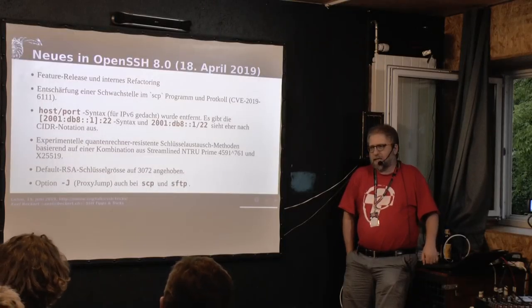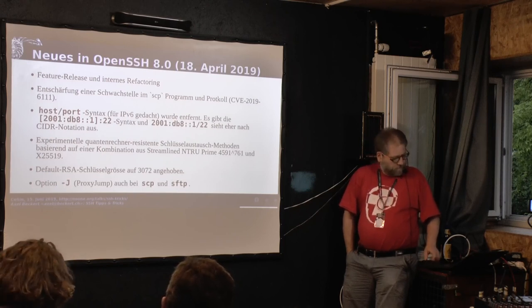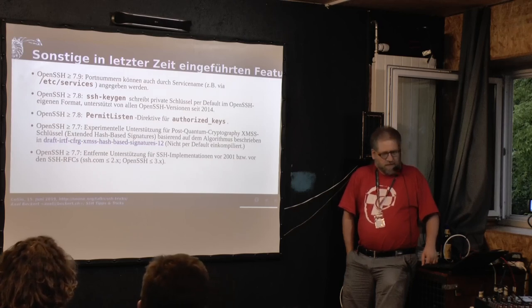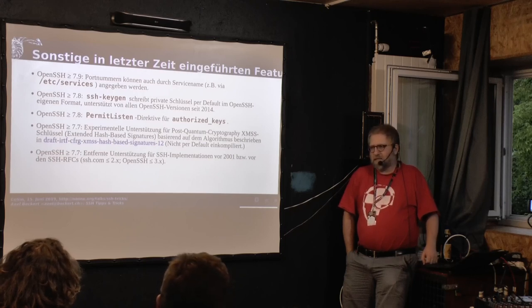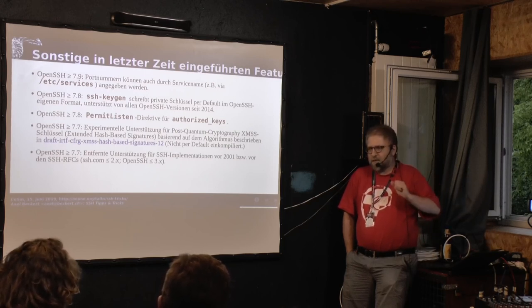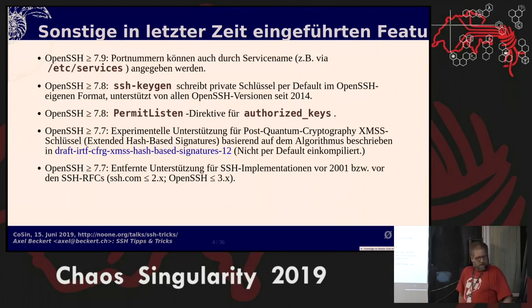They introduced the dash-J option for proxy jumping — we'll come to that later — also for SCP and SFTP command-line tools; previously it was only available in SSH. In other recent versions, you can now specify port numbers by service names. For example, if you connect to an HTTPS port, you can say dash-P HTTPS instead of 443. That's new since 7.9.